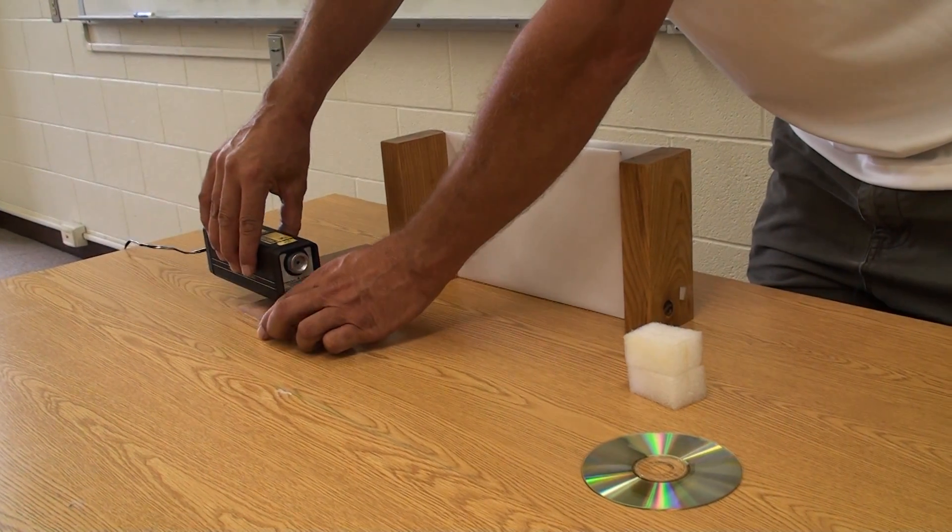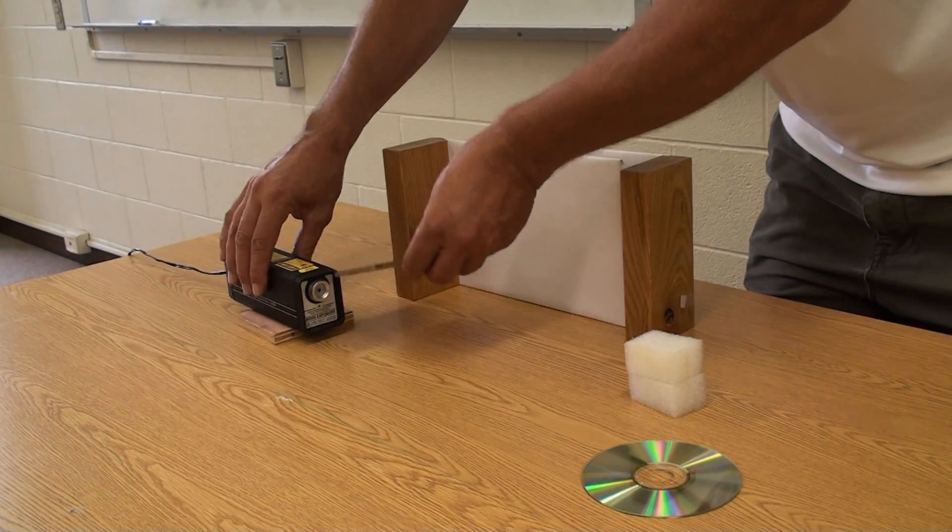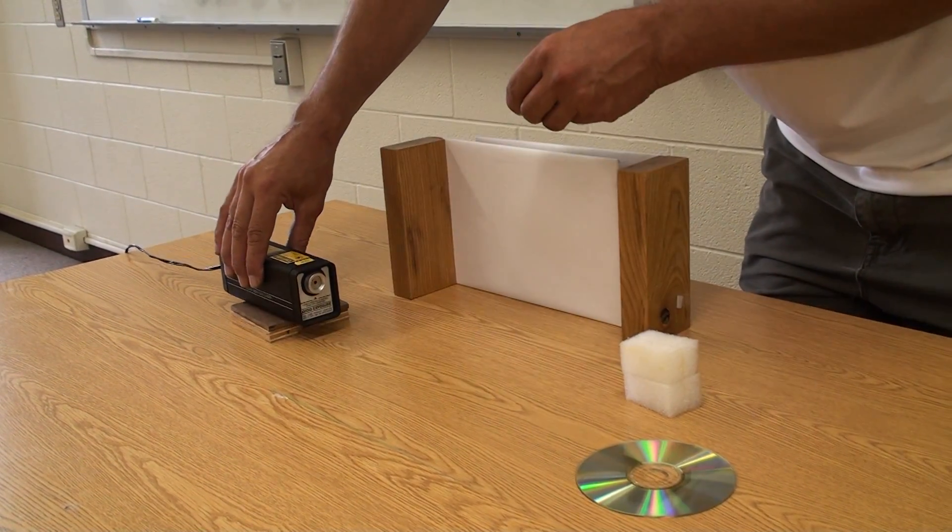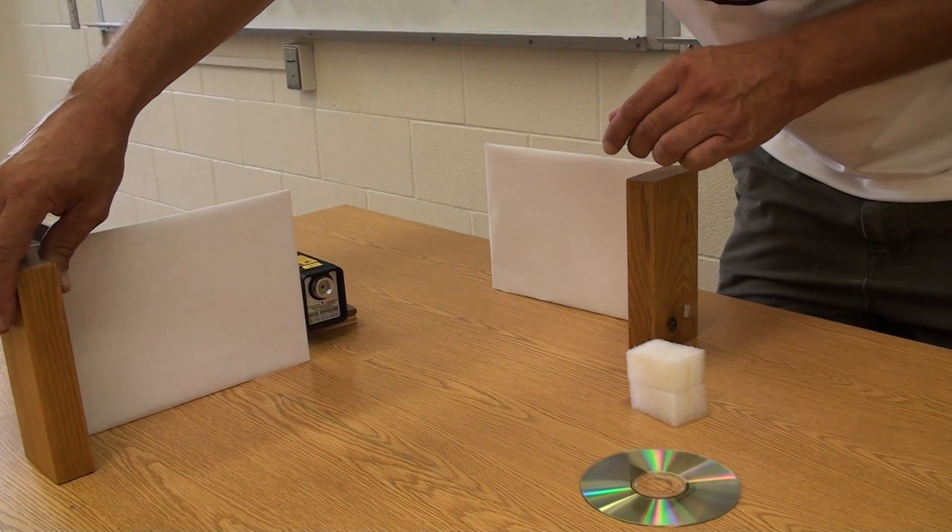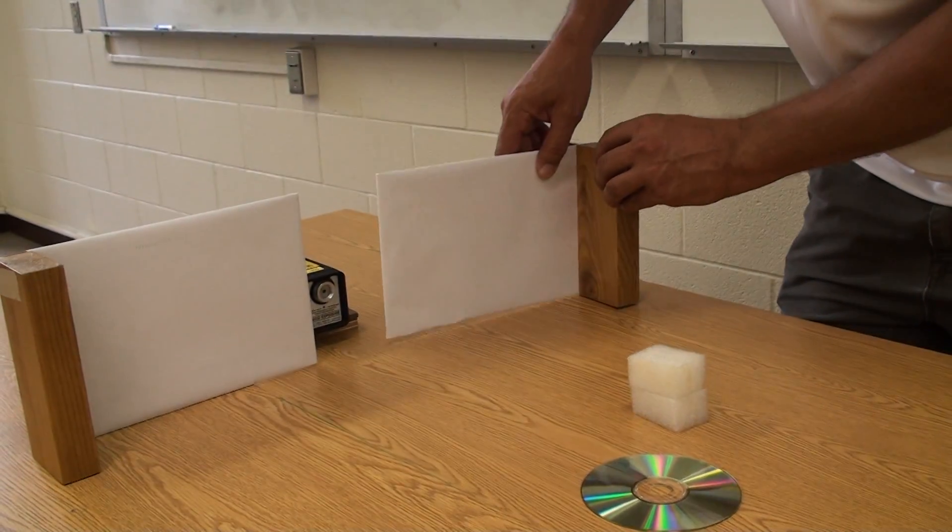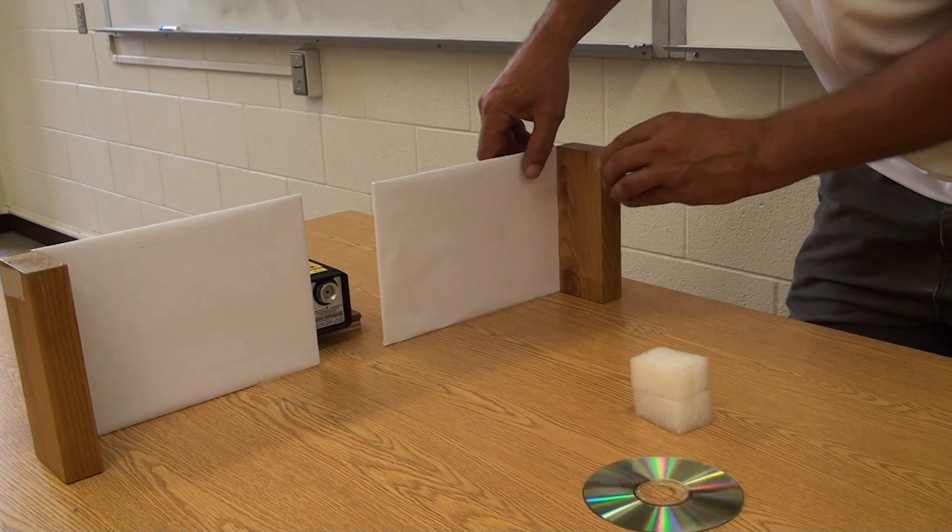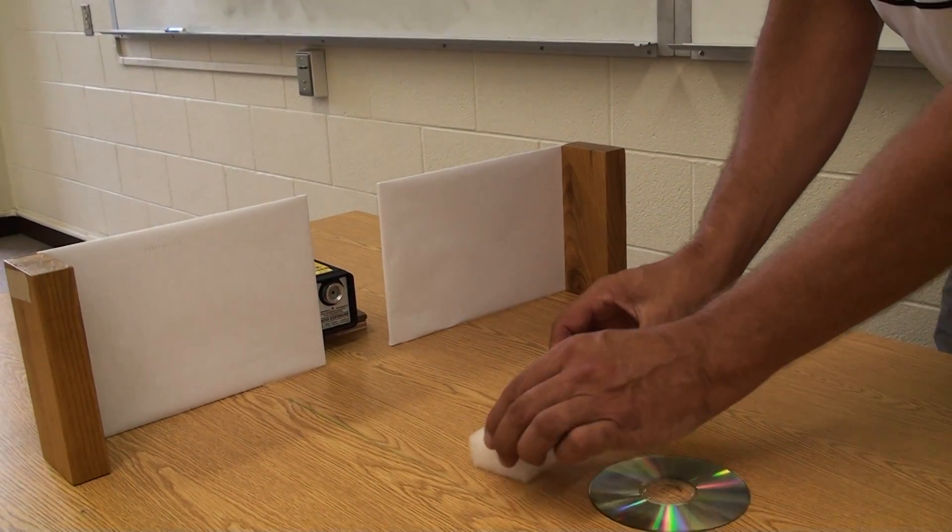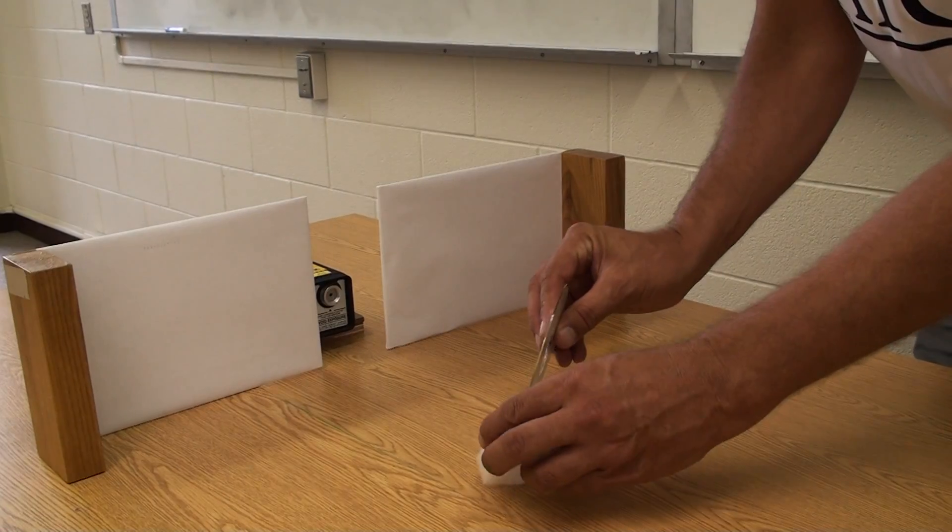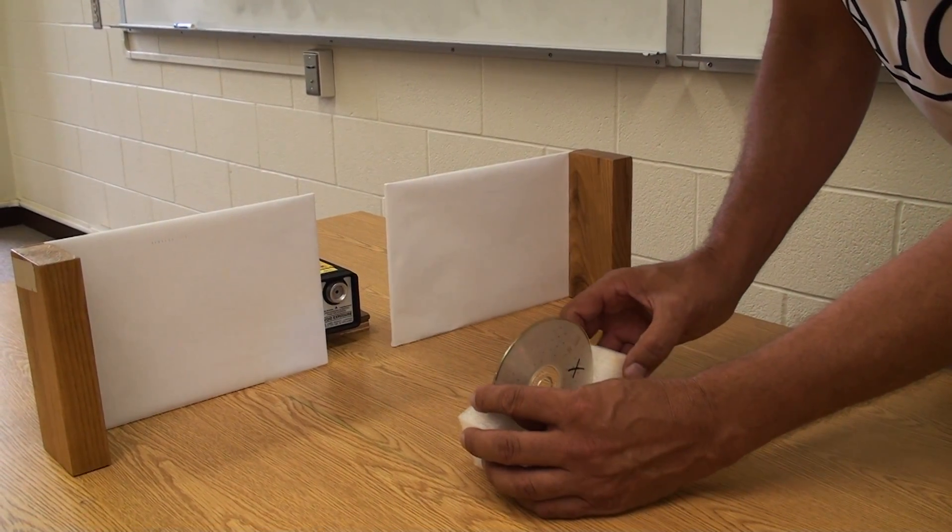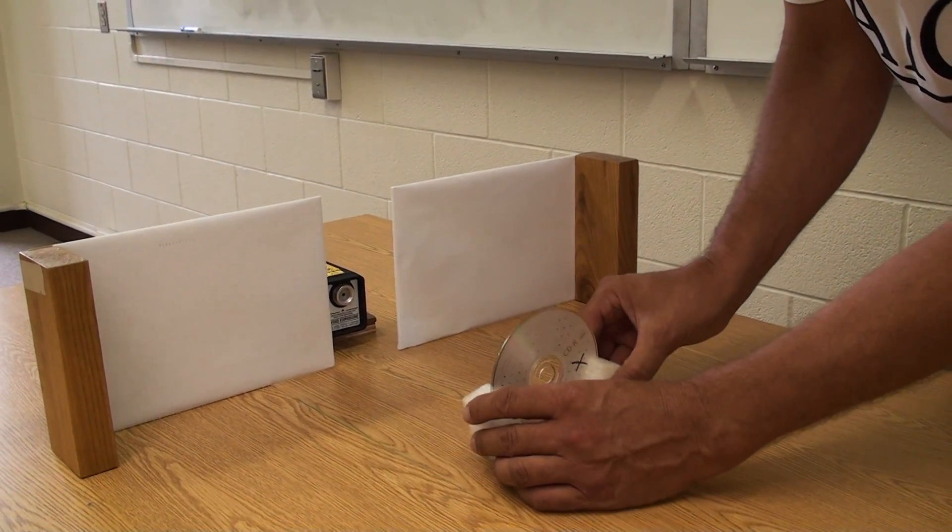Place the laser at a height such that its beam will strike the CD at a point where the grooves are oriented vertically. Place the screens where they will catch the reflected light. Stand the CD up using the slotted foam. Take some care to send the direct reflection straight back at the laser.